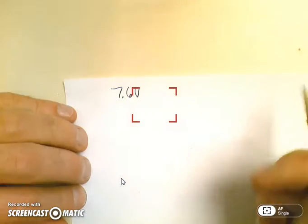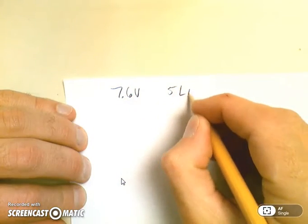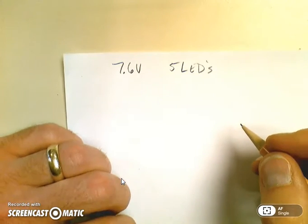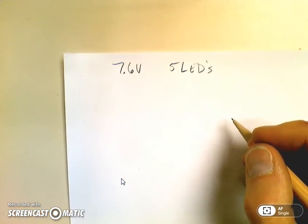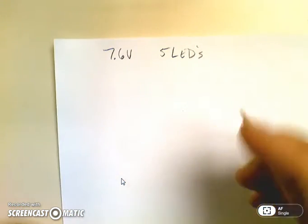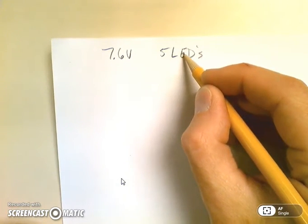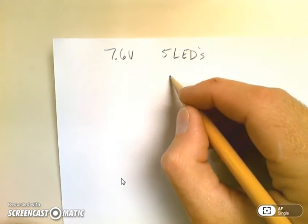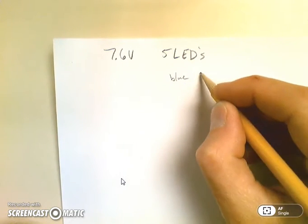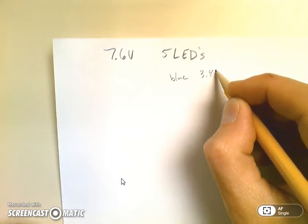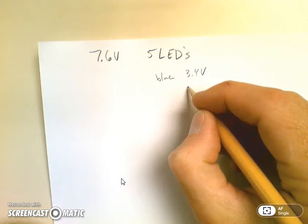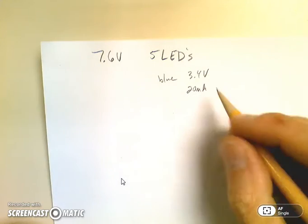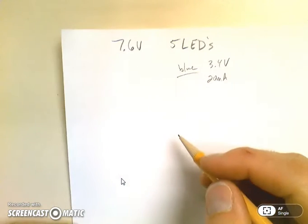I'm going to start with 7.6 volts and I'm going to pick five LEDs, and the first thing I want to do is do my testing on my LEDs to make sure I can make decisions on what LEDs I want to go with. But I'm going to go with a blue LED that's 3.4 volts to light it and it also has a 20 milliamp current requirement.